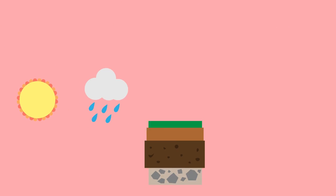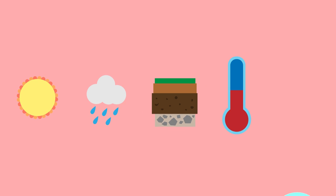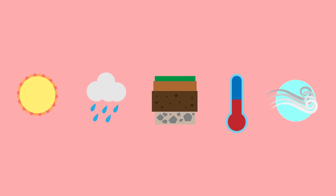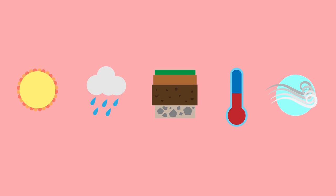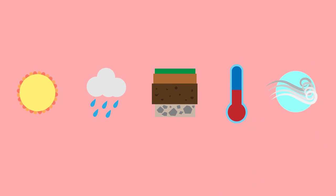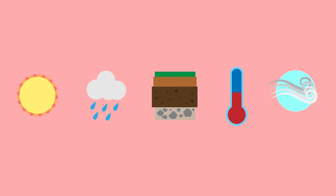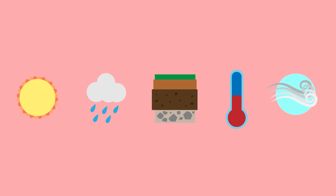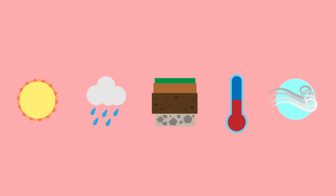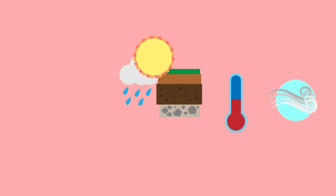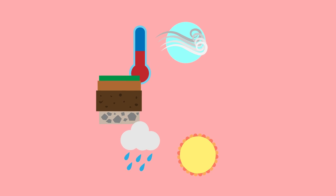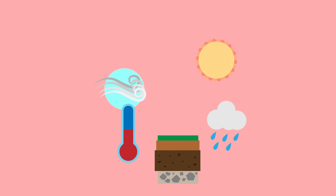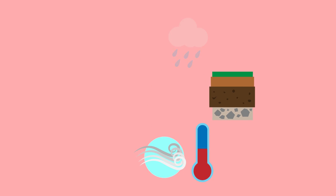Sunlight, precipitation, soil composition, temperature and air currents are all examples of abiotic components that can be found within an ecosystem. While each of these components is important by itself, how they interact with each other also greatly influences their environment.